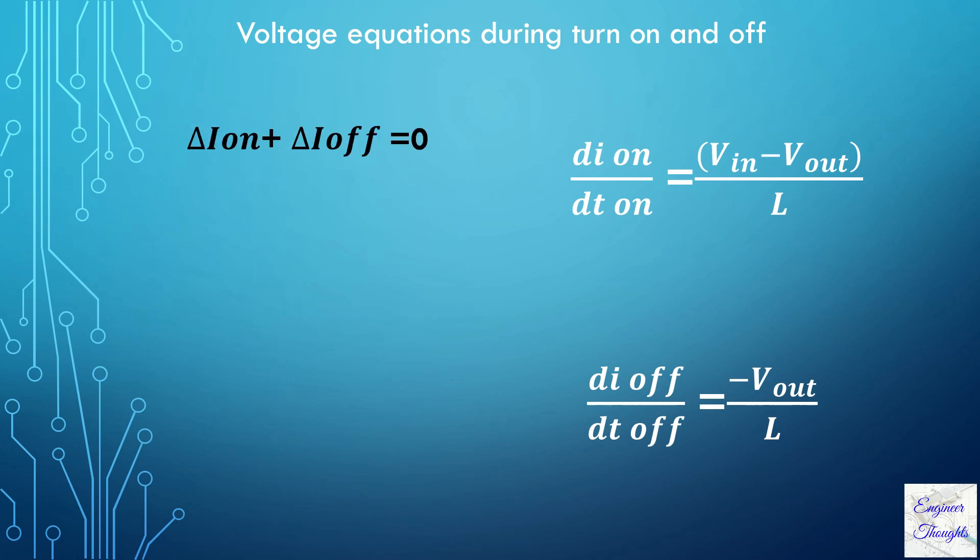Thus, substituting for dI_on and dI_off in the equation, we get the relationship in terms of voltage as follows. So this equation is also termed as volt-second balance of the inductor. Similarly, the same principle applies for the capacitor, and it is called amp-second balance.